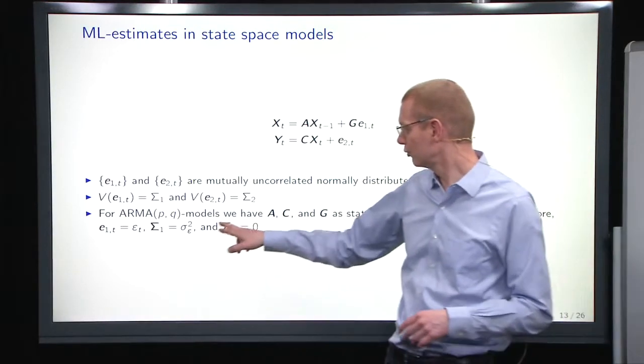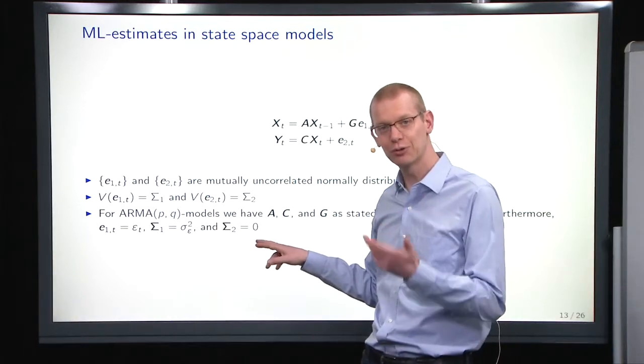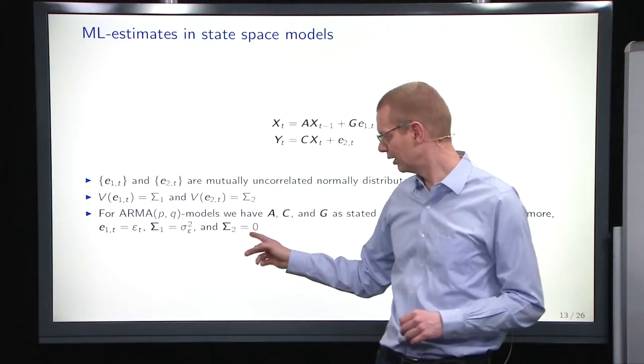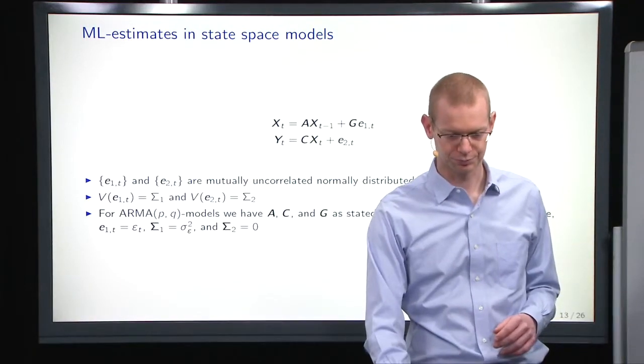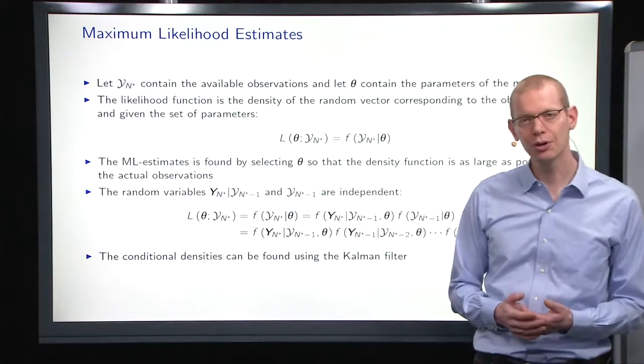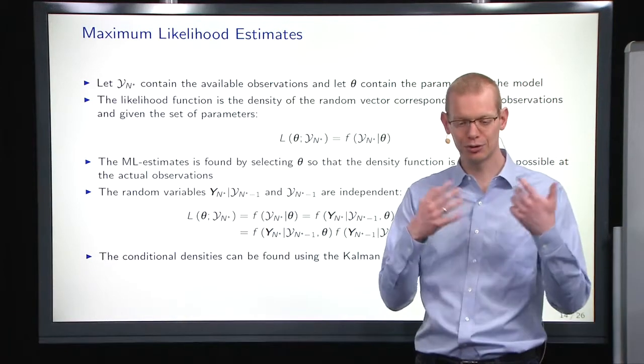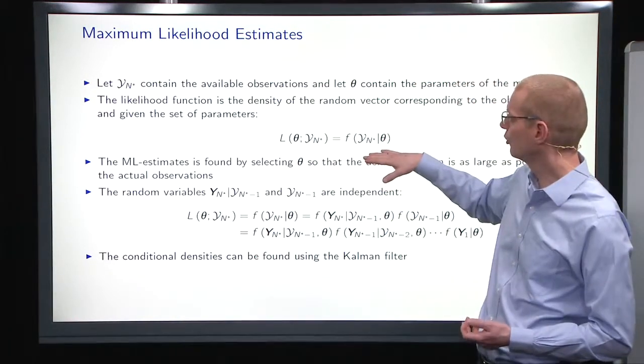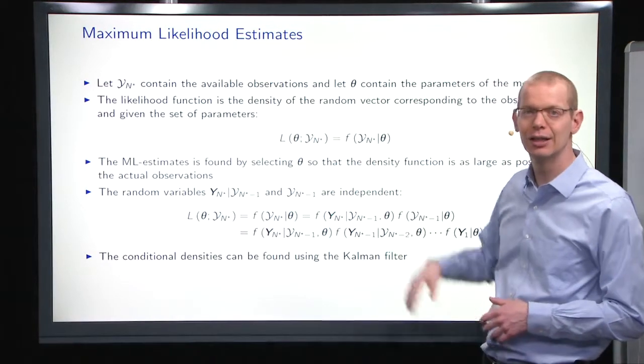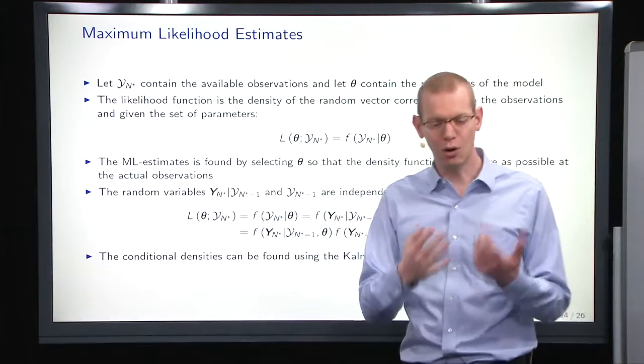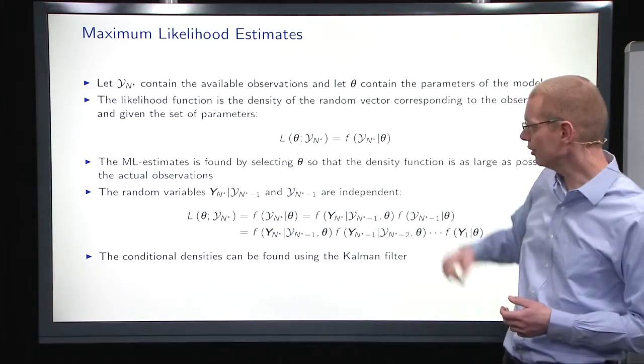But if we restrict ourselves to a pure ARMA model, we will restrict sigma squared to be zero. So how does it work? We're going to assume a normal distribution. In order to do the maximum likelihood, then we have to look at the joint density of all the observations given a set of parameters.